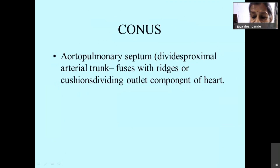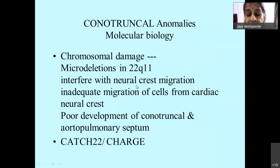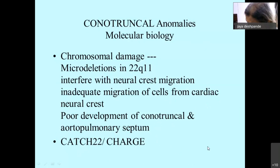Most conotruncal anomalies have microdeletions of chromosome 22q11. This microdeletion interferes with neural crest migration, causing inadequate migration of cells from the cardiac neural crest. This leads to poor development of the conotruncal and aortopulmonary septum. Associated syndromes include CATCH-22 and CHARGE syndrome.